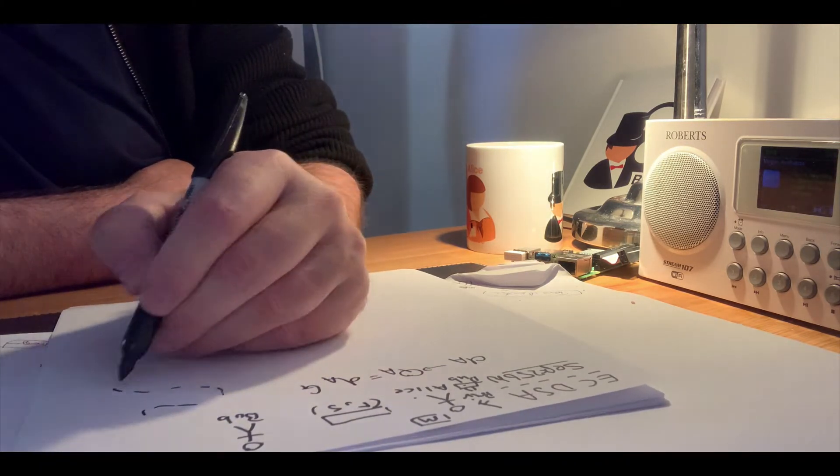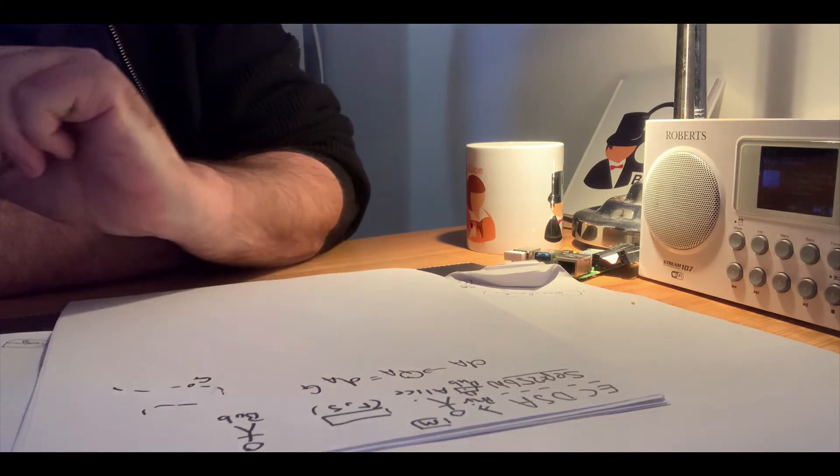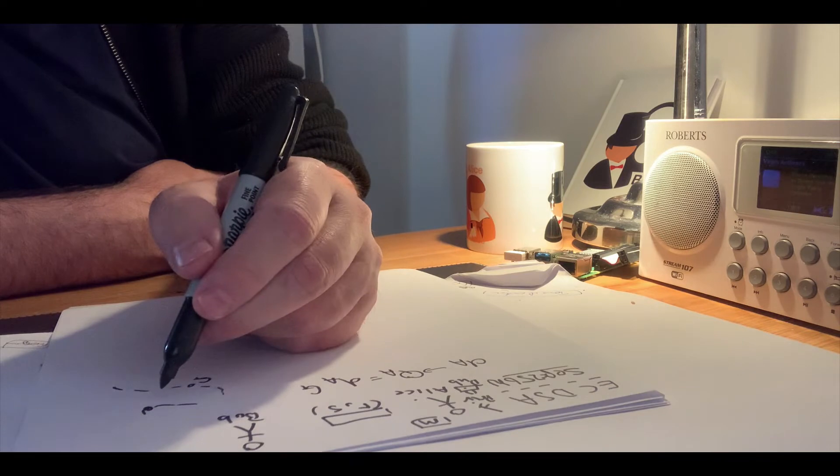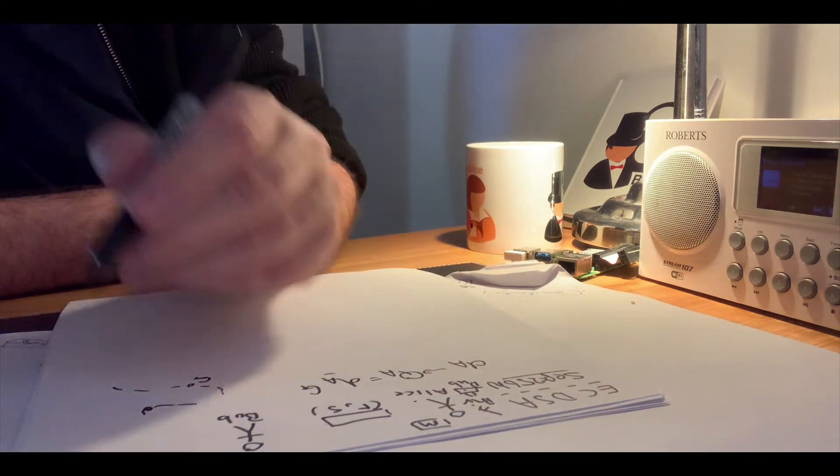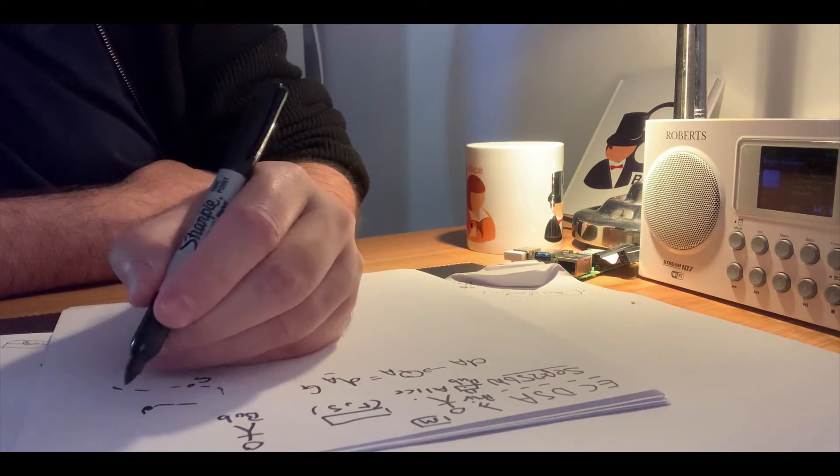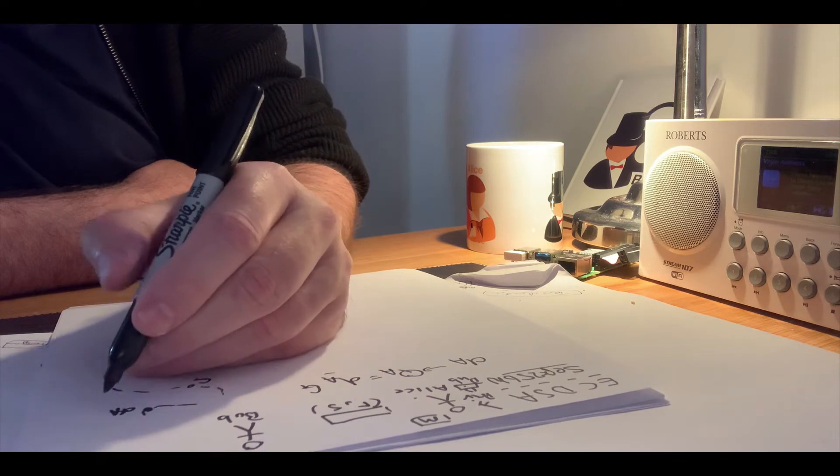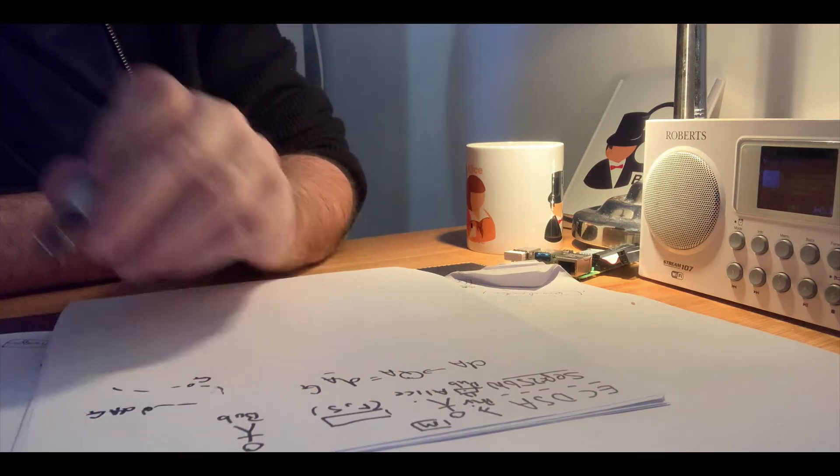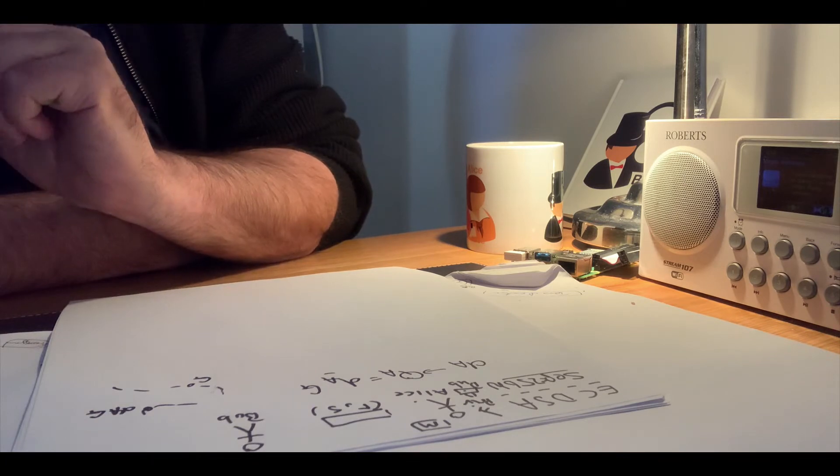If we look at an elliptic curve, we have what's called the base point here, and then we add that base point da times to give us our public key. So this is da times G, which is our public key that Alice will use.